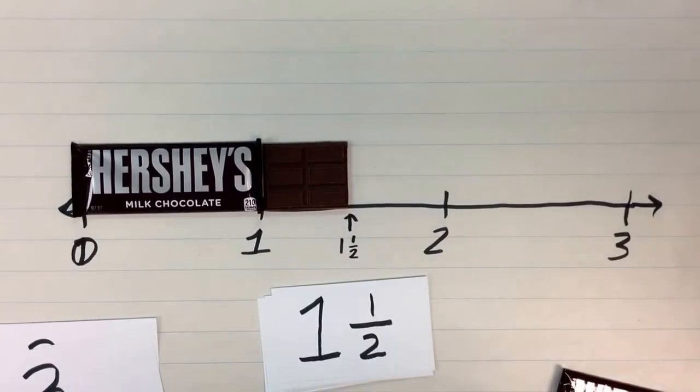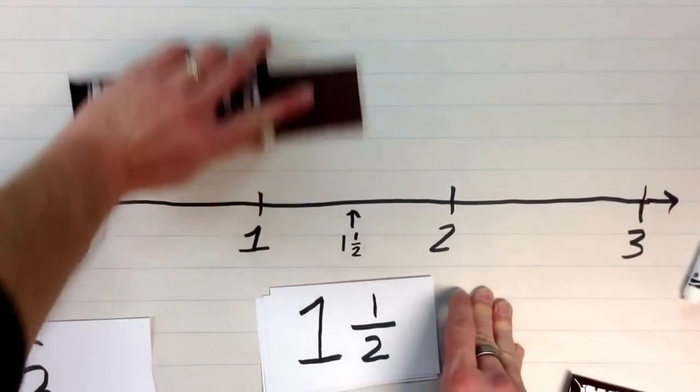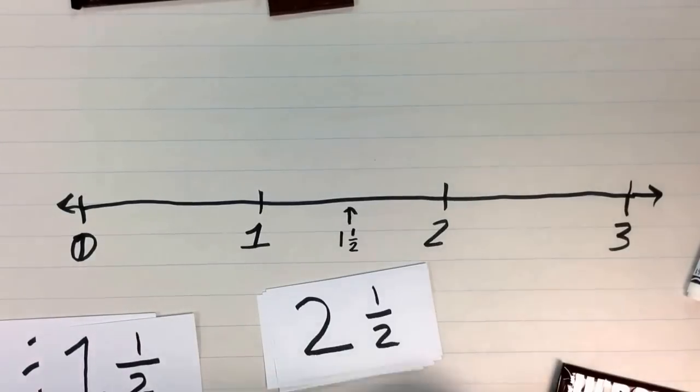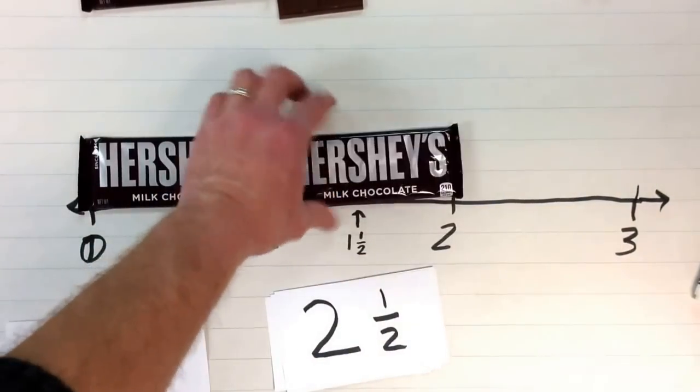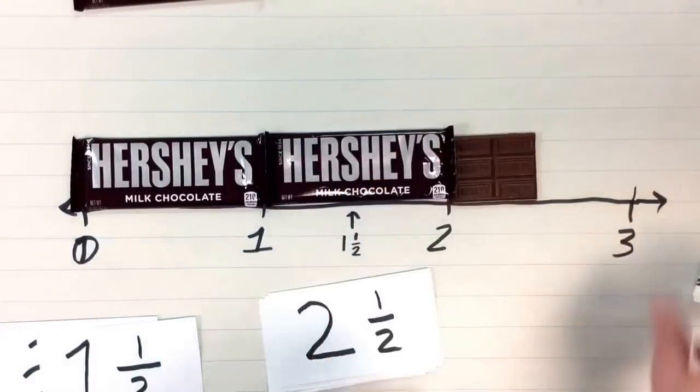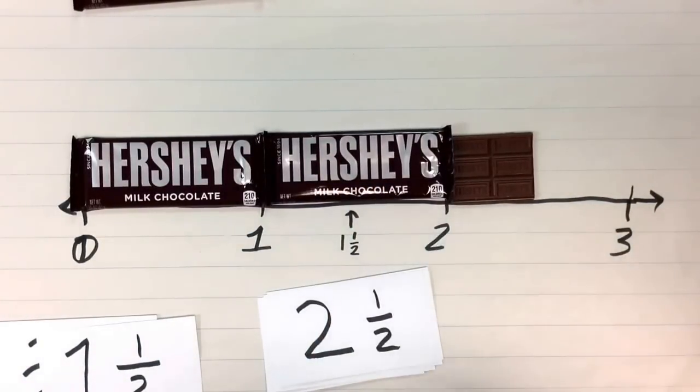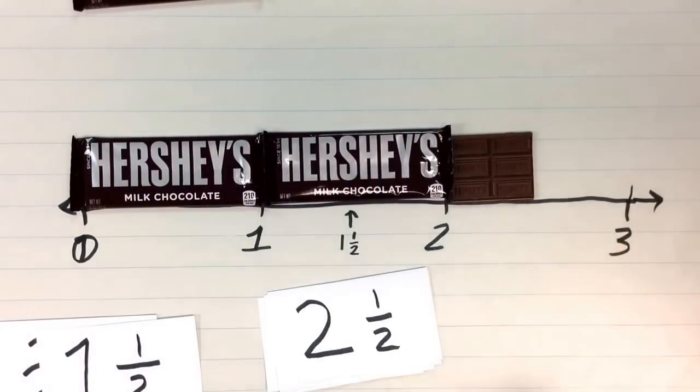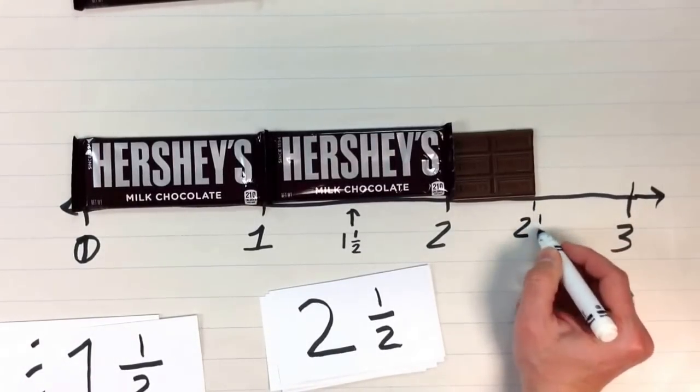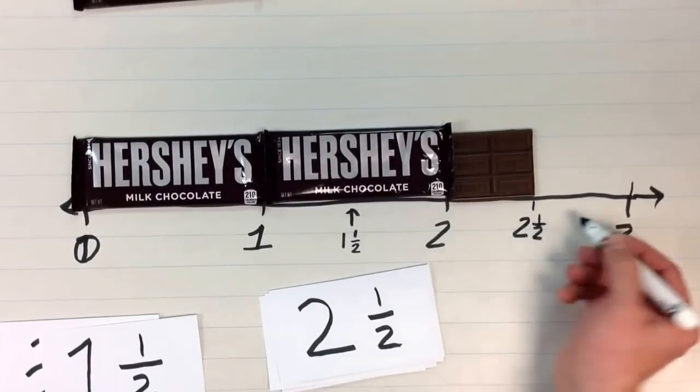Let's say that we were lucky enough to end up with two and one half candy bars. Well, that would be one, two, and then, of course, one half on the candy bar. And that would put us halfway between the two and the three. If we split that into two equal parts, we would end up with halfway between the two and the three is two and one half.